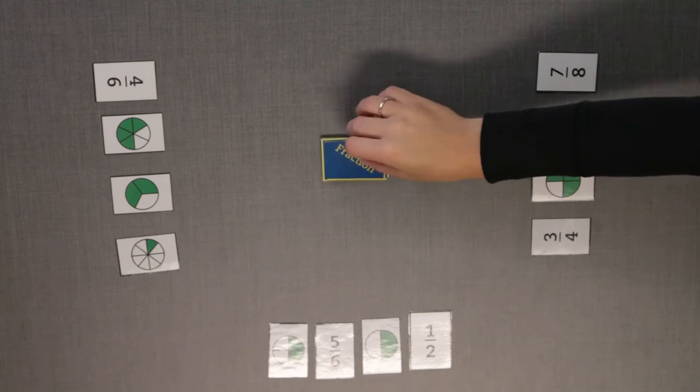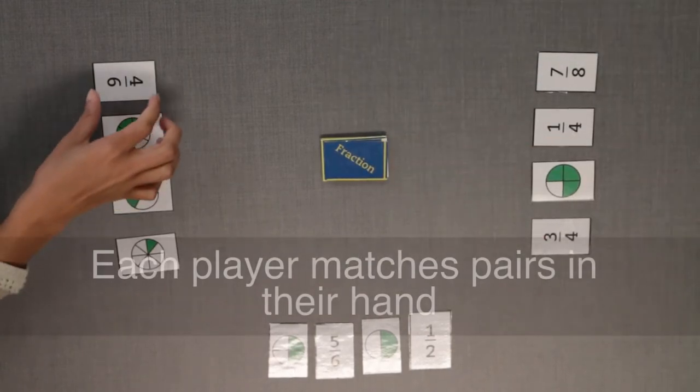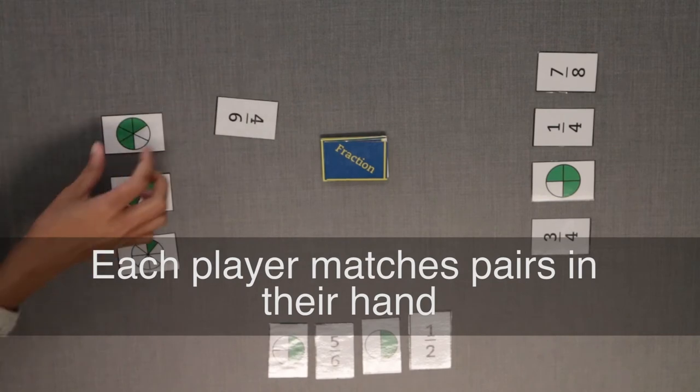For example, four eighths equals one half. You may play as many pairs as you can during each turn.